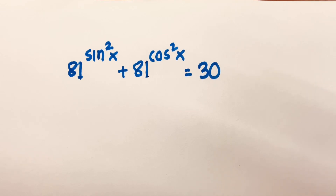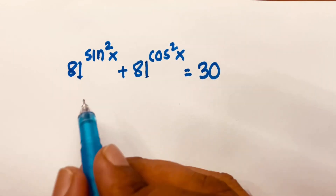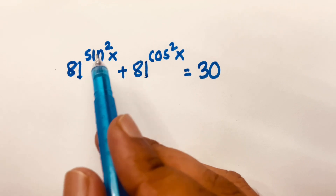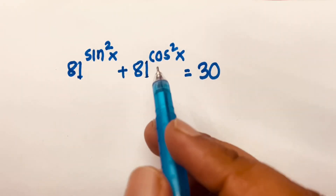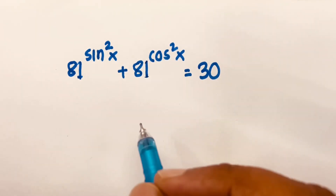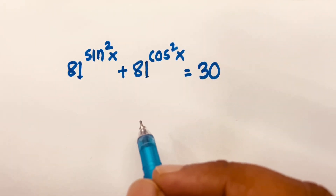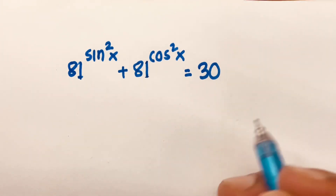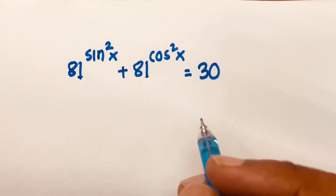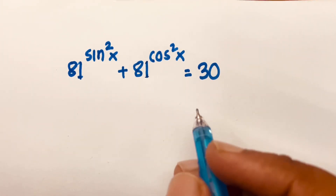Hello everyone. How to solve this math olympiad question? 81 power sine squared x plus 81 power cos squared x is equal to 30. We will find out what is the value of x in this equation.